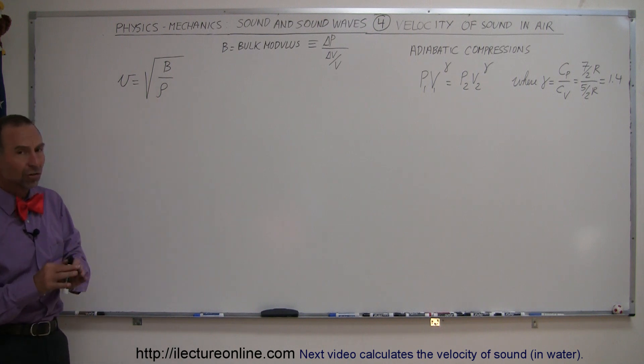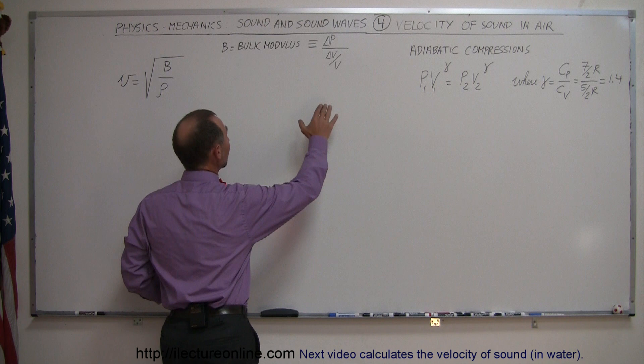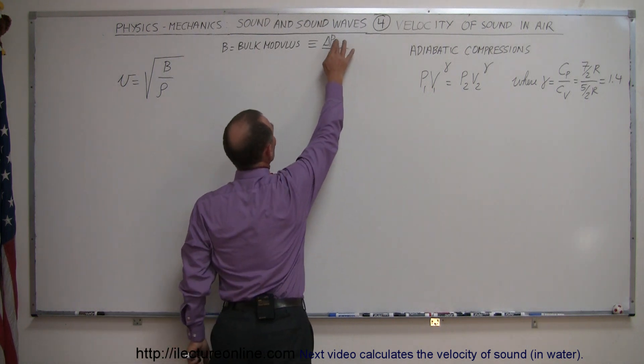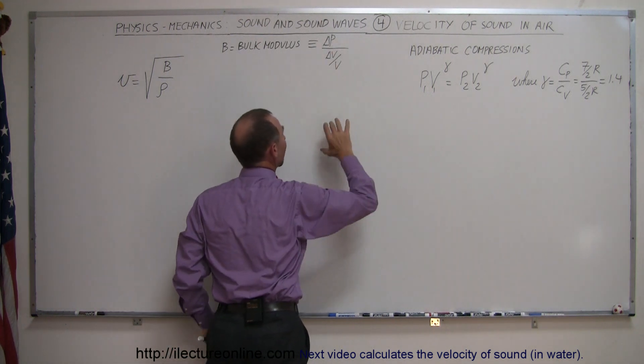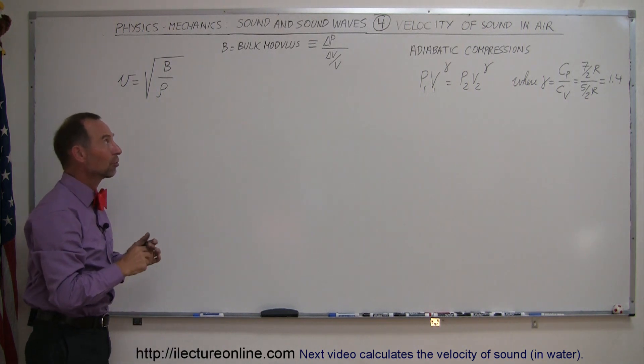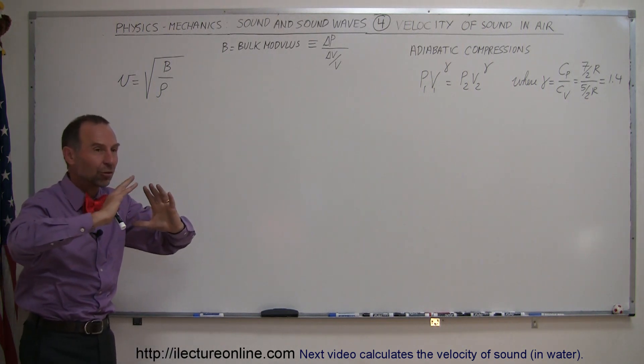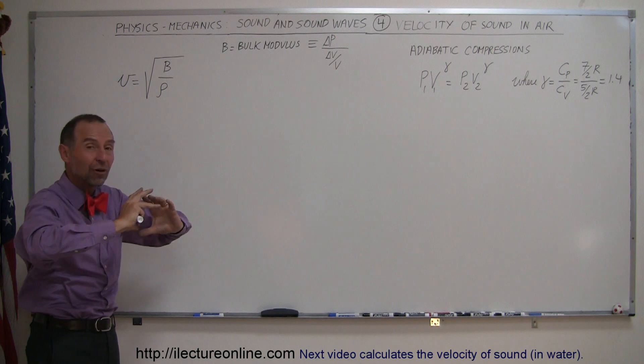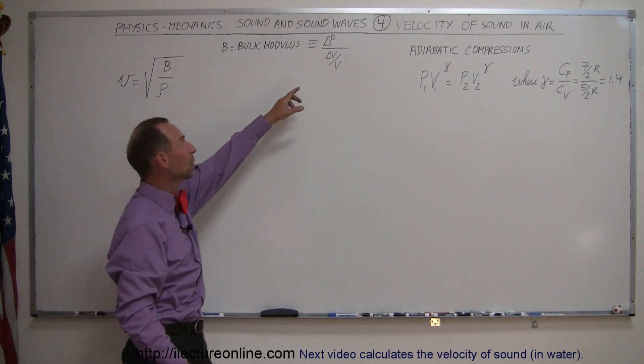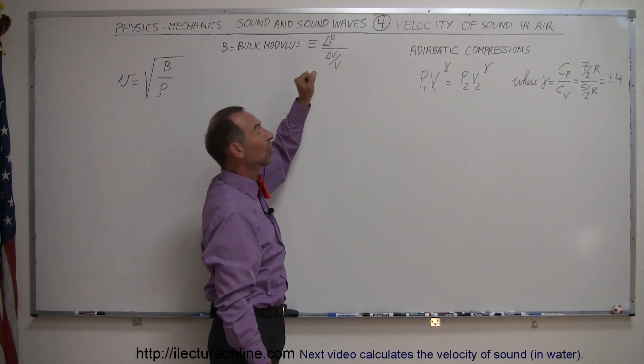The bulk modulus is defined as a ratio of the change in pressure divided by how much that volume changes compared to its original volume. If you increase the pressure on a substance, you tend to decrease its volume, and the ratio of that decrease goes in the denominator and the change in pressure in the numerator.